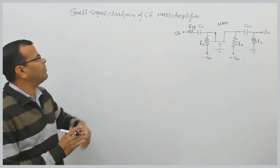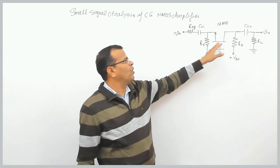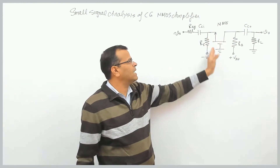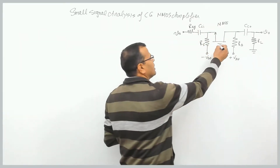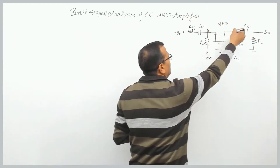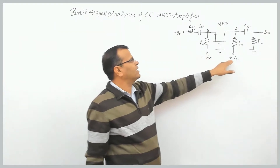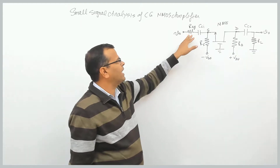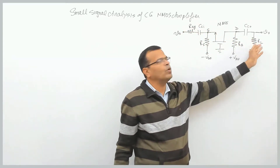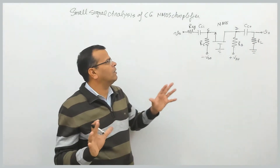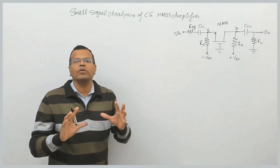Hello friends, now we will perform the small signal analysis of the common gate NMOS amplifier. Here we have an NMOS configured as a common gate amplifier. The gate terminal is grounded, the input side is the source terminal, and the output side is the drain terminal. These are the biasing signals: VSS on the source side, VTT on the other, and the input is connected through resistance RSIG (resistance of the signaling source), with a load resistance on the output side. I have taken both resistances together to make the analysis clearer.